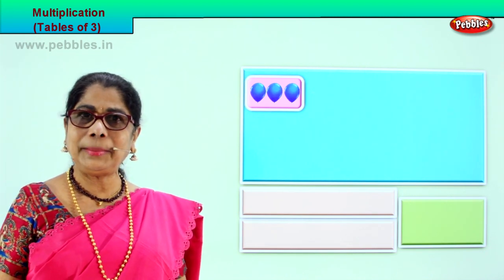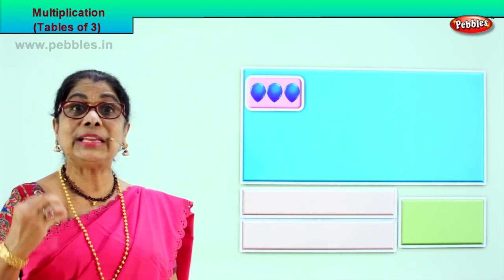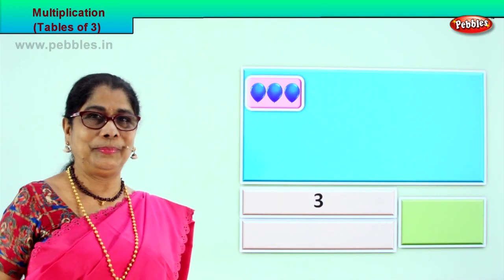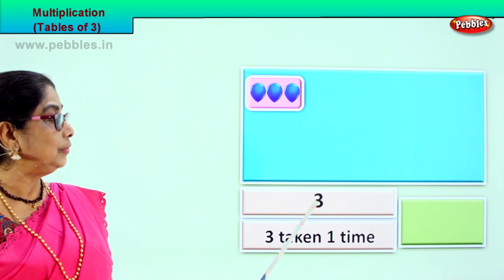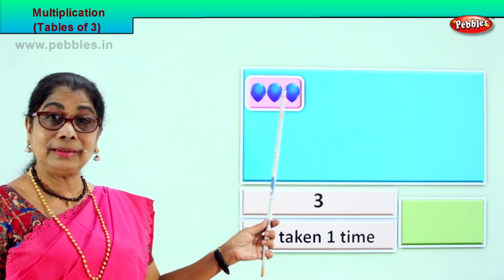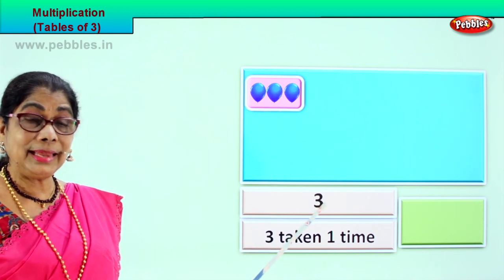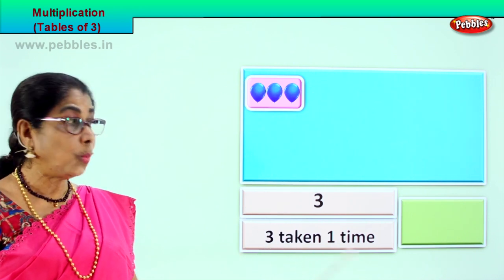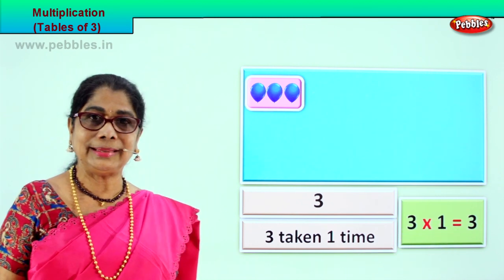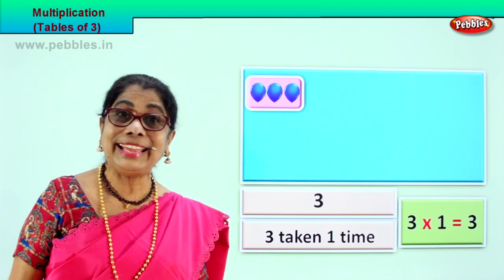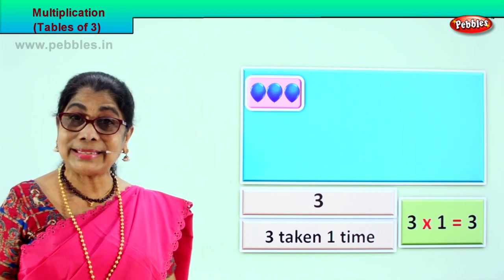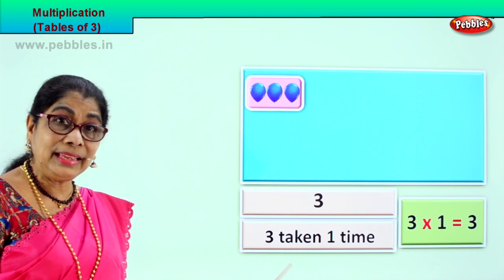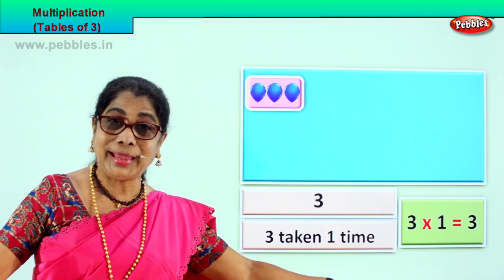Look at the first one. Look at the picture. When you see one, two, three — in one box, three balloons. Three, how many times? One. Three taken once. Three taken how many times? One time. So we have three — pictorial representation. Three taken one time. How will we write this? Three into one. Three into one is equal to three. How do we read it? Three ones are three. Three into one is three.